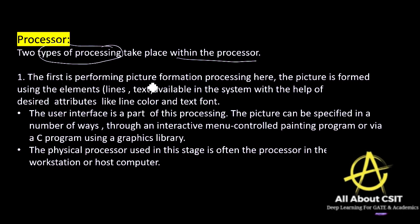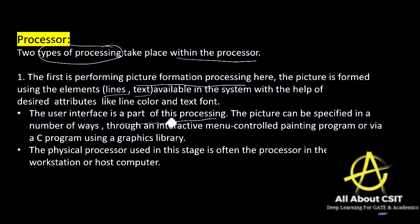The first type is picture formation processing. Whatever picture you want to work on, that picture formation processing takes place in the processor. The picture is formed using elements like lines and text, with desired attributes such as color, font, and text style. The user interface is a part of this processing — input is given by the user and based on that input, transformations take place.